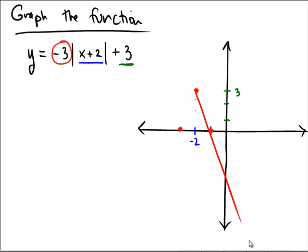It's going to come down on that side and come upward on this side — and that's the graph of this absolute value. You can use the horizontal and vertical shifts to find the vertex, and then use the number in front of the absolute value as a slope-like concept.